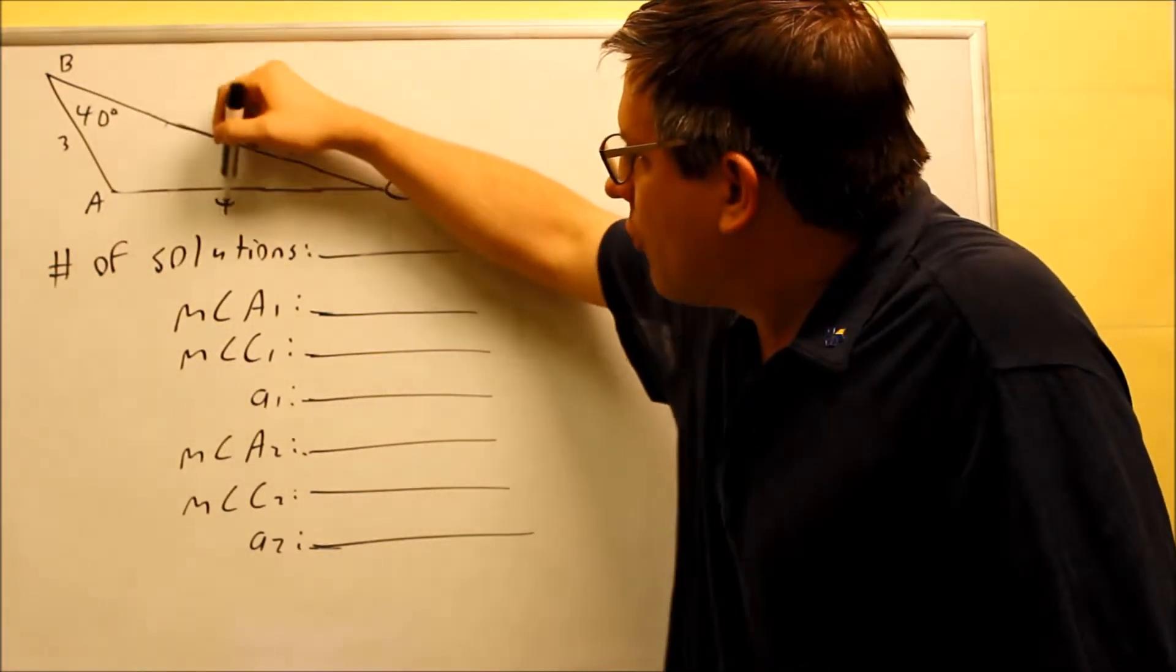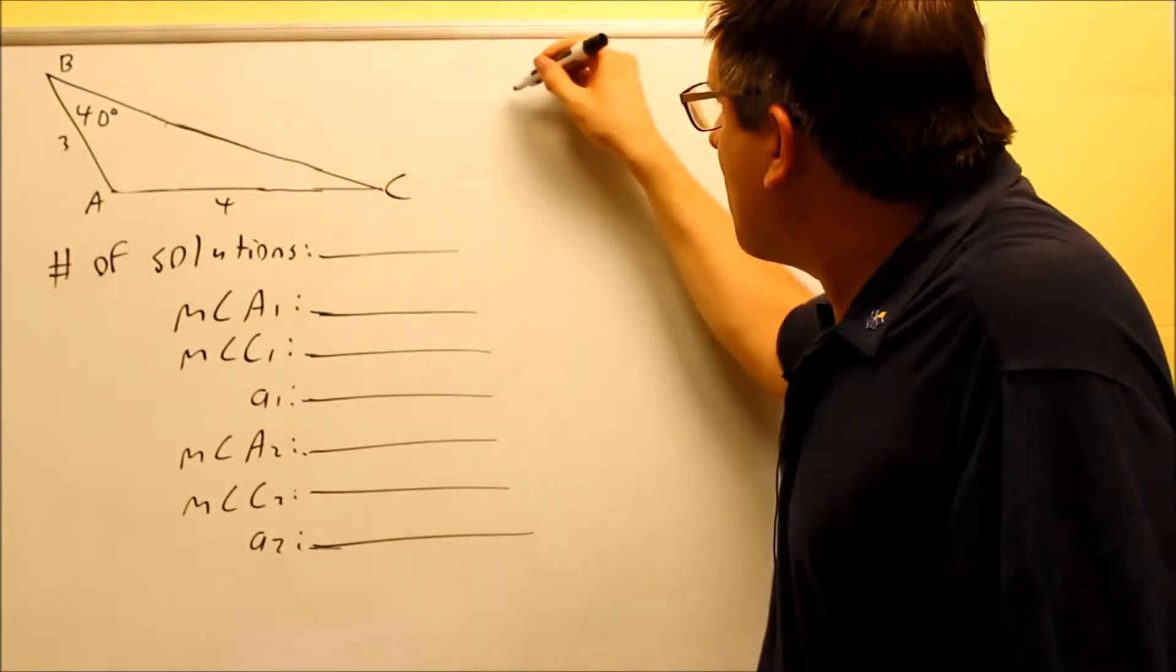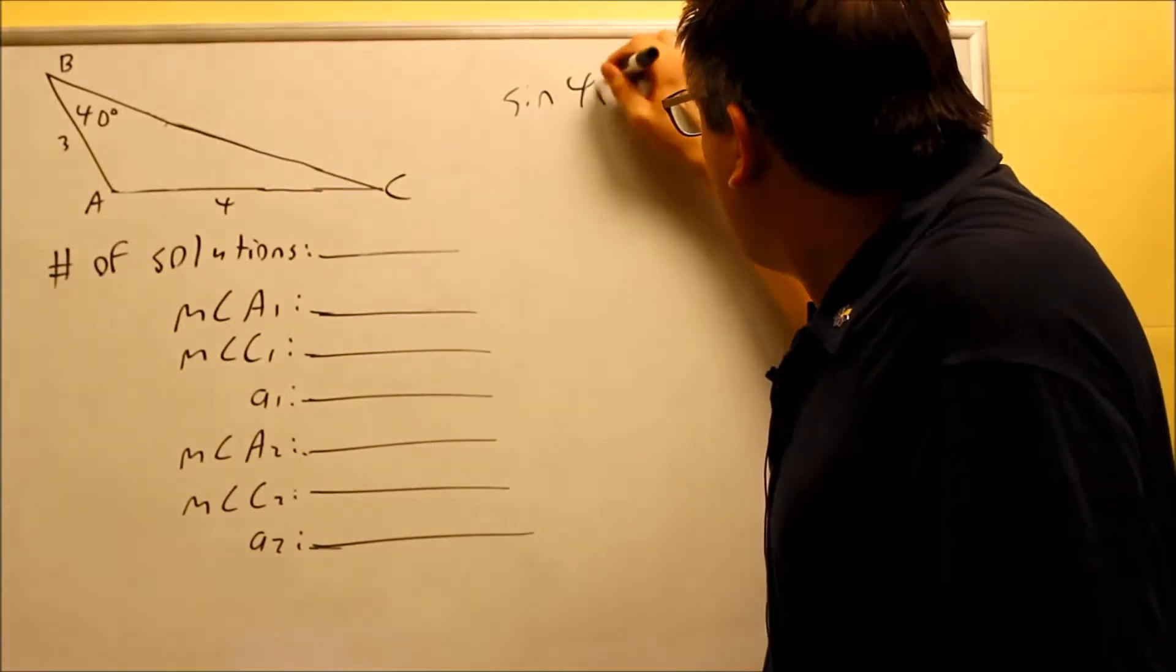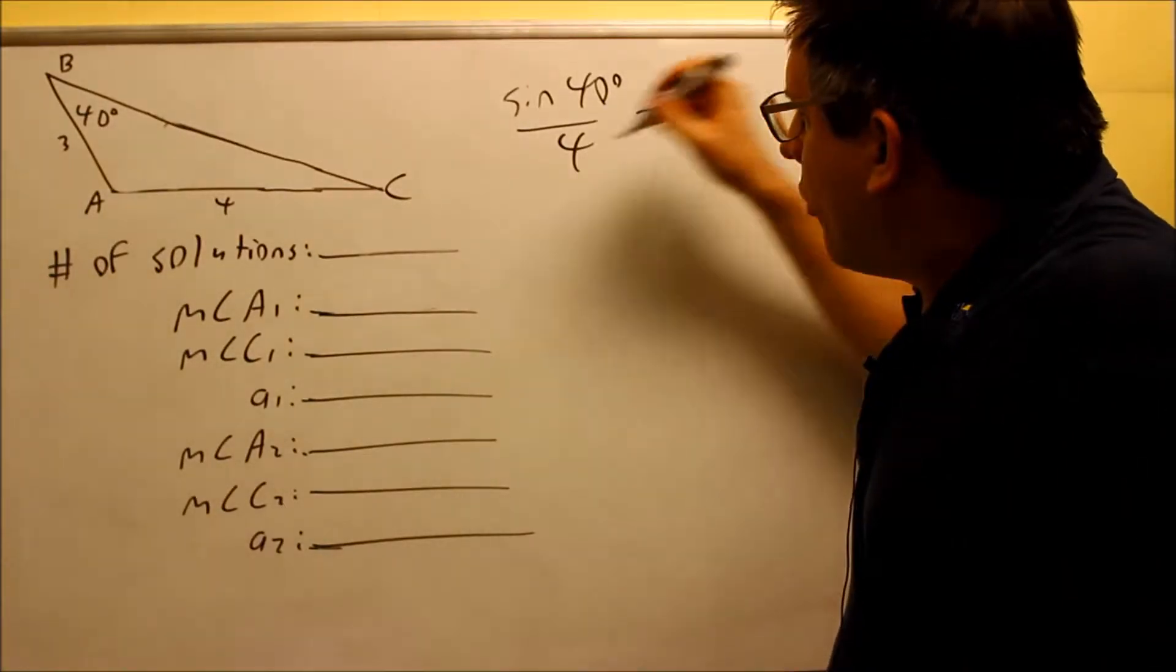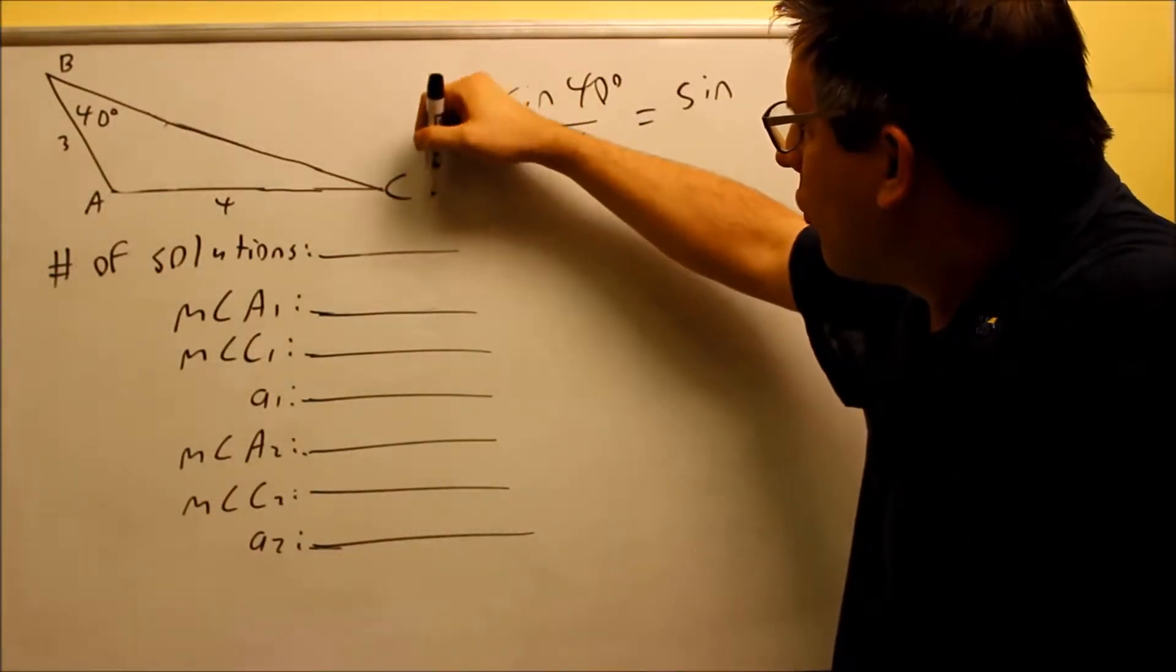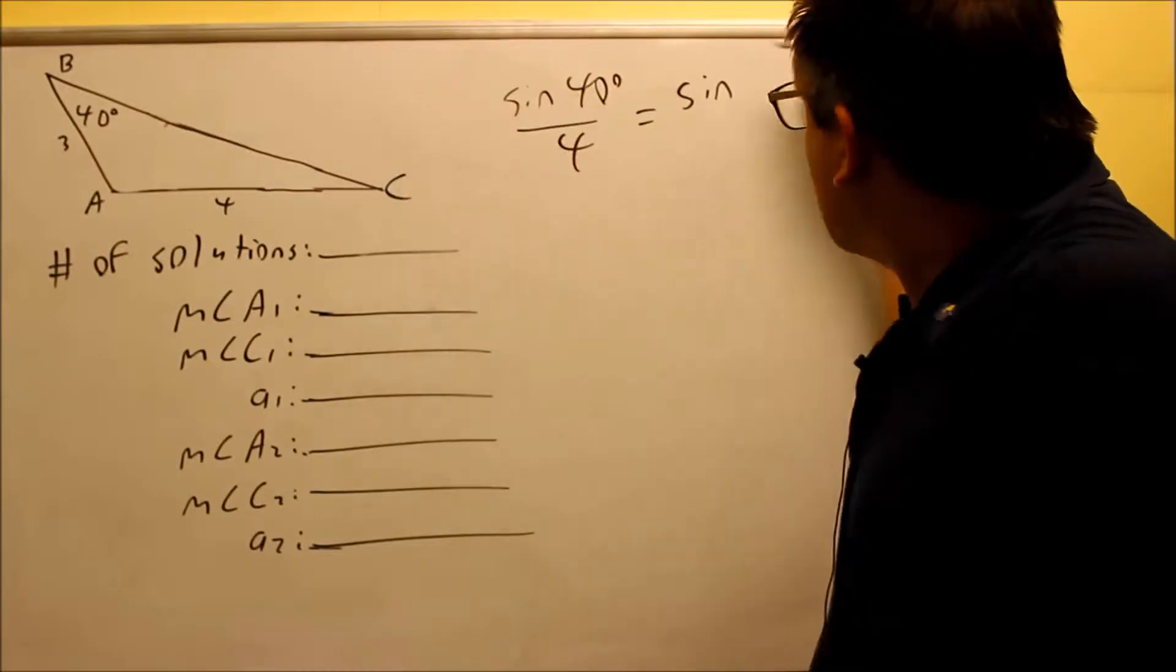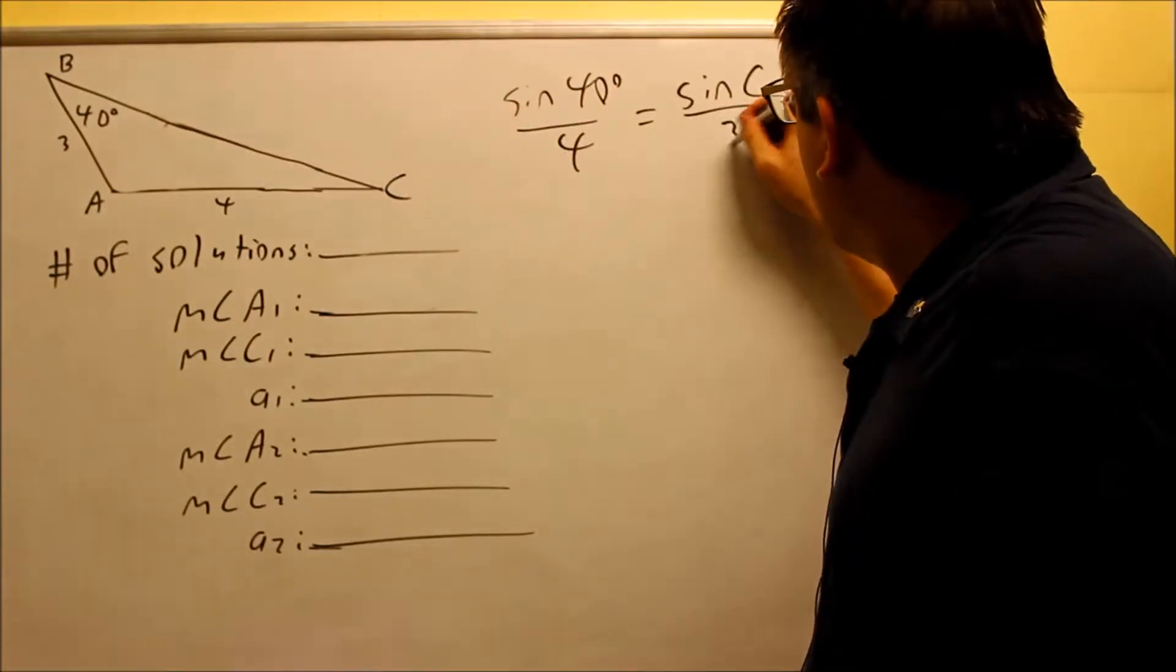So we're going to do our known ratio first. We have 40 degrees and a side opposite of that. We're going to do sine of 40 degrees over 4 is going to equal... We only have enough information to solve for angle C. So we're going to do sine C over 3.